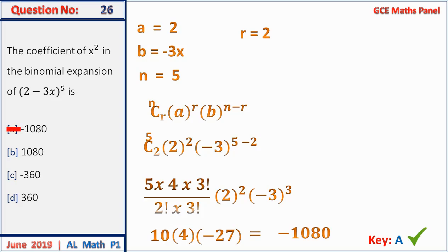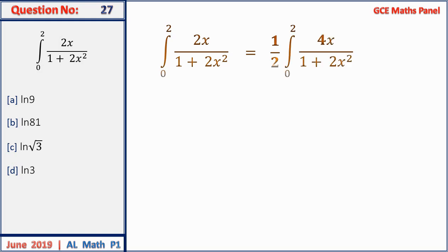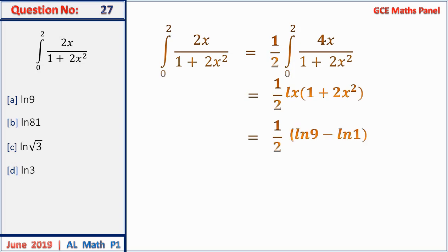Question 27: integrate 4x/(1 + 2x²) from 0 to 2. Notice differentiating the denominator gives 4x, so we write (1/2) × 2 × 4x/(1 + 2x²). Integrating gives (1/2) ln(1 + 2x²). Evaluating from 0 to 2: (1/2)(ln 9 − ln 1) = (1/2) ln 9 = ln √9 = ln 3. Answer D.